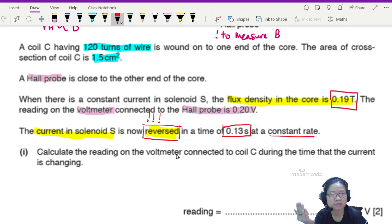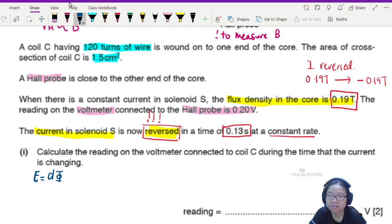This means that the field or the current will reverse in a time of 0.13 seconds at this constant rate. So this is your magnetic field. The current is reversed, meaning I reverse. So you go from 0.19 tesla to negative 0.19 tesla. So it will flip direction, you have a negative sign. So we're going to start off first with induced EMF is equal to delta flux over dt.